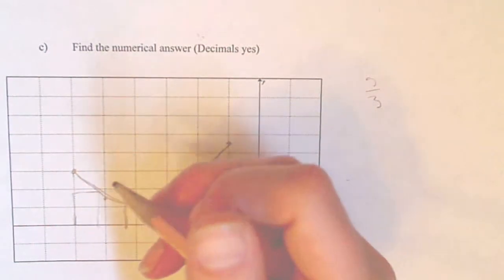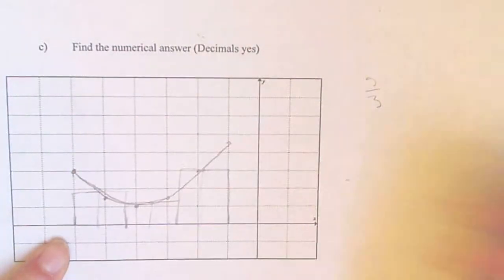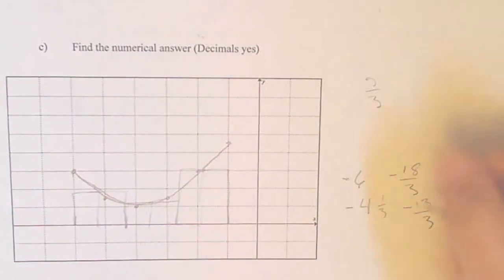And to find the midpoint of this one, you're going to put negative 6, which is the same as negative 18 over 3. And this one is negative 4 and 1 third or negative 13 thirds. So when you combine those, you get negative 31 thirds. So your midpoint equals negative 4.676.